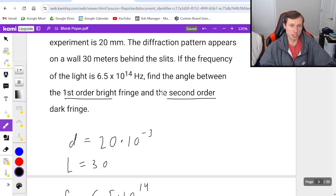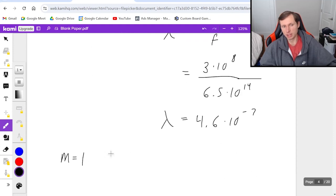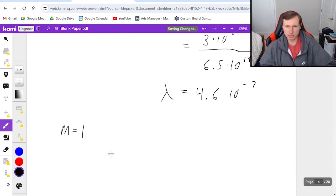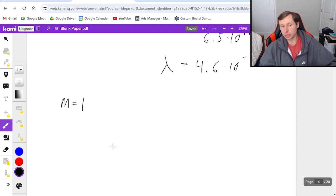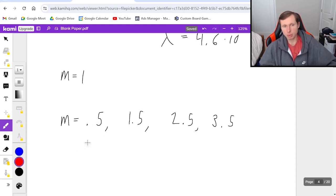They want the angle difference between the first order bright fringe and the second order dark fringe. The first order bright fringe is m = 1. Dark fringes are more complicated. Dark fringes are at the 0.5 values: 0.5, 1.5, 2.5, 3.5, etc. These are the first, second, third order dark fringes. So the second order dark fringe is m = 1.5. I'll use an equation when m = 1, then again when m = 1.5.